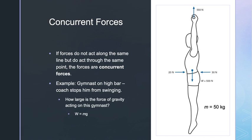If forces do not act along the same line but do act through the same point, they are concurrent forces. Consider a gymnast who jumps up and grasps the high bar. His coach applies external forces both in front of and behind him to stop his body from swinging. The external force applied from the front is 20 Newtons, 30 Newtons applied from the posterior, and an upward vertical reaction force of 500 Newtons is exerted by the bar onto the gymnast's hands.